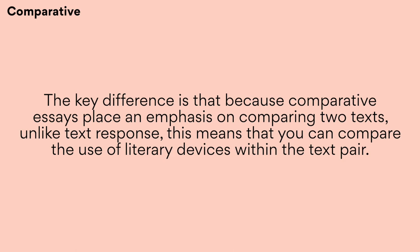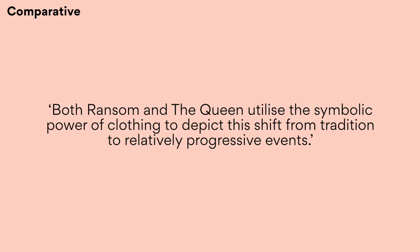You might ask yourself: what is similar and different about how the two texts use literary devices? How does the purpose of literary devices compare between the texts? For example, from LSG's Ransom and The Queen comparative study guide: 'Both Ransom and The Queen utilize the symbolic power of clothing to depict this shift from tradition to relatively progressive events.' The writer identifies a similarity between the two texts using the literary device of clothing and links it back to the theme of tradition and change.